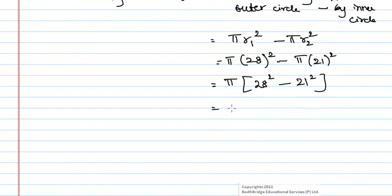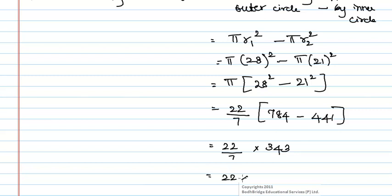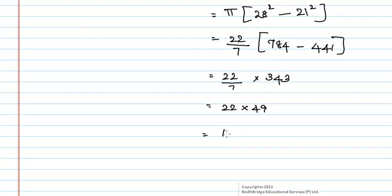Substituting the value of pi here, that is 22 by 7, of 28 square is 784 minus 21 square is 441, which is equal to 22 by 7 into 343. On further simplification we will get 22 into 49, which is equal to 1078 meter square.